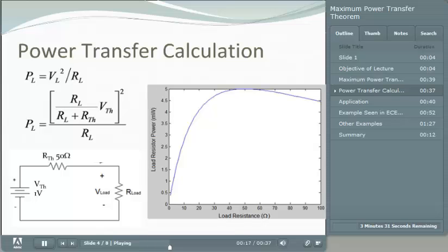As you can see from the plot, the maximum power dissipated by the load occurs at 50 ohms, which is the point where the load resistance is equal to the Thevenin resistance of the power source—the series combination of the Thevenin voltage source and the Thevenin resistor.